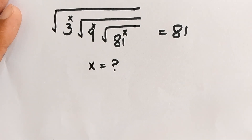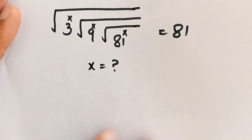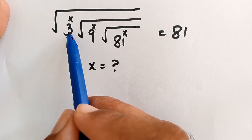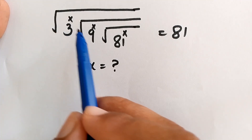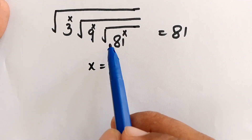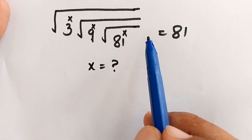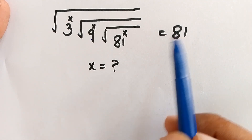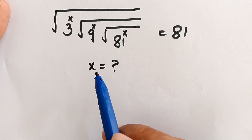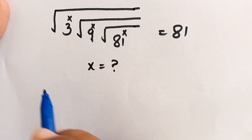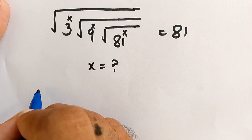Hello, you are welcome. Today we have to solve this math question: the square root of 3 to the power of x, times the square root of 9 to the power of x, times the square root of 81 to the power of x, which is equal to 81. We have to find the value of x.